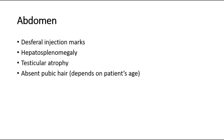On the abdomen, we look for any injection marks, especially for Desferral, which is an iron chelation therapy given after a few episodes of blood transfusion. We should also palpate the liver and spleen to look for hepatosplenomegaly, and if present, describe the surface, border, and consistency — whether it is firm or hard.